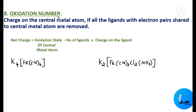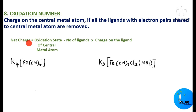Oxidation number is the charge on the metal atom if all the ligands with the electron pairs shared to the central metal atom are removed. The formula is: net charge on the coordination entity equals the oxidation state of the central metal atom plus the sum of (number of each ligand × charge on that ligand). We shall now calculate the oxidation number for the central metal atom in two examples.